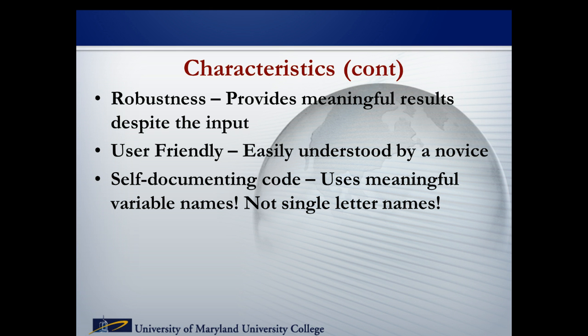Robustness means that it provides you meaningful results despite the input. That means if you give the application the input it's looking for, it will give you the expected results. If you provide input other than what it's expecting, it will give you some message — preferably an error message — saying you've entered improper values, please enter those values again.